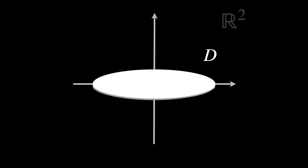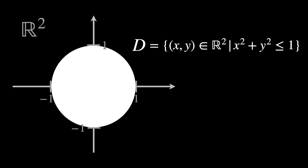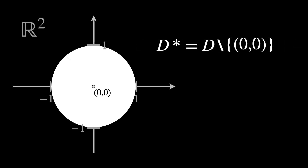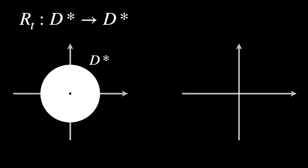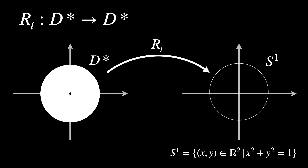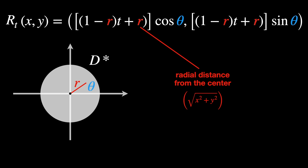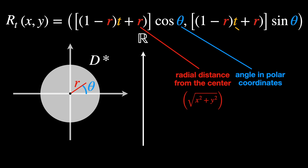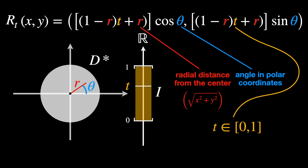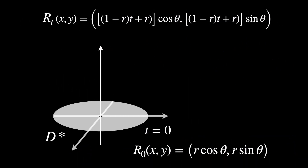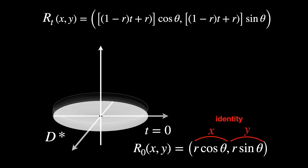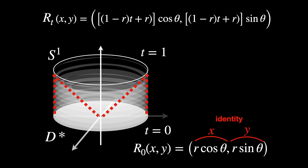Let's see a concrete example of a deformation retraction. Consider the unit disk in R² with the origin (0,0) removed — the punctured disk. We define a deformation retraction that continuously shrinks every point radially onto the boundary circle S¹. In the formula for this family of functions, r is the radial distance from the origin, theta is the angle in polar coordinates, and t is the homotopy parameter from 0 to 1. At t equals 0, we get the identity; at t equals 1, we get the retraction onto S¹ — exactly a projection onto the unit circle.